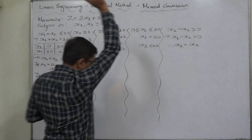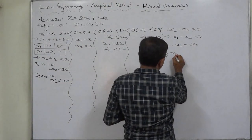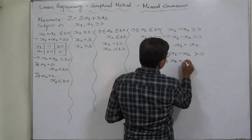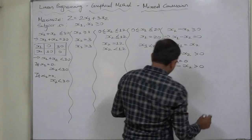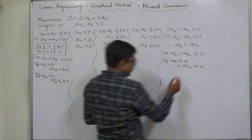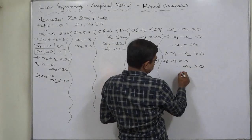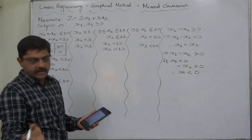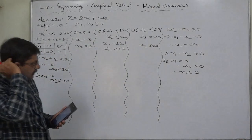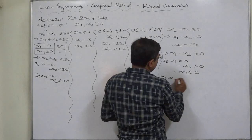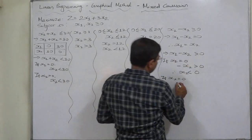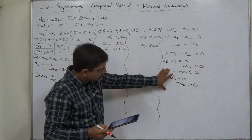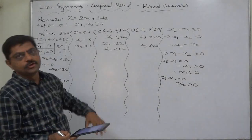x1 minus x2 equals 0 means x1 equals x2 — both take the same value at the same time. The line starts from (0,0): (1,1), (2,2), (3,3), (4,4), and so on. The inequality part is very interesting: x1 minus x2 greater than 0. If x1 equals 0, then minus x2 greater than 0, which means x2 less than 0. If x2 equals 0, then x1 is greater than 0.